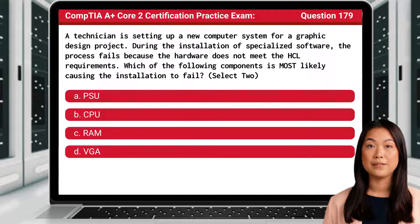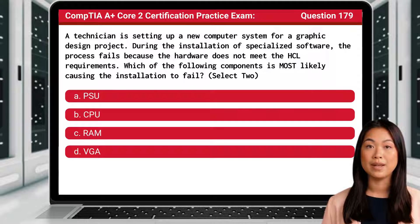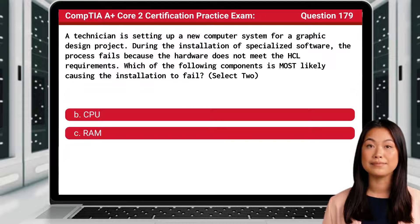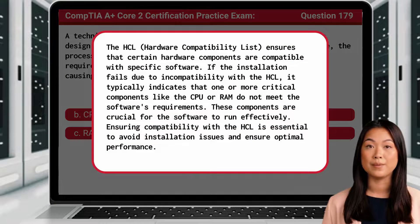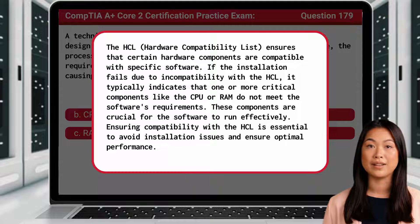The installation process fails because the hardware does not meet the HCL requirements. Which of the following components is most likely causing the installation to fail? The answer is B and C. The HCL, or Hardware Compatibility List, ensures that certain hardware components are compatible with specific software. If the installation fails due to HCL incompatibility, it typically indicates that one or more critical components like the CPU or RAM do not meet the software's requirements. Ensuring compatibility with the HCL is essential to avoid installation issues and ensure optimal performance.